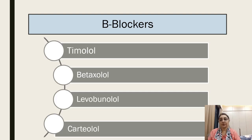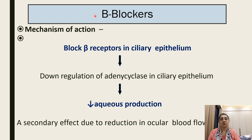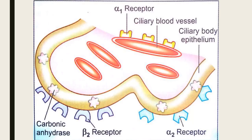The first group is beta blockers: timolol, betaxolol, levobunolol, and cartiolol. Their mechanism involves beta receptors on the ciliary epithelium — beta-2 receptors present at the ciliary body epithelium downregulate the adenylyl cyclase pathway, reducing secretion of aqueous humor. There is also a secondary effect due to reduction in ocular outflow.